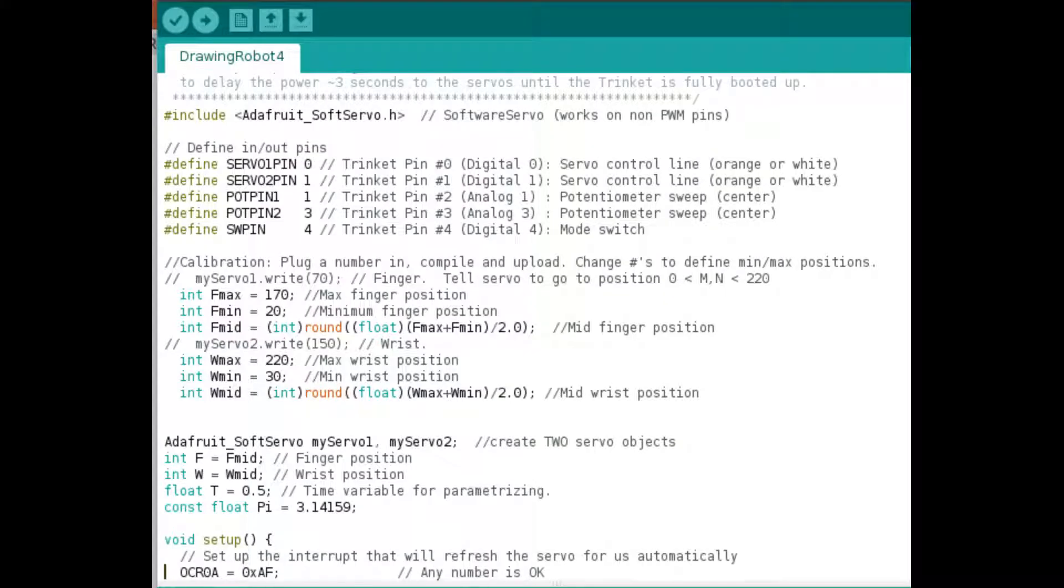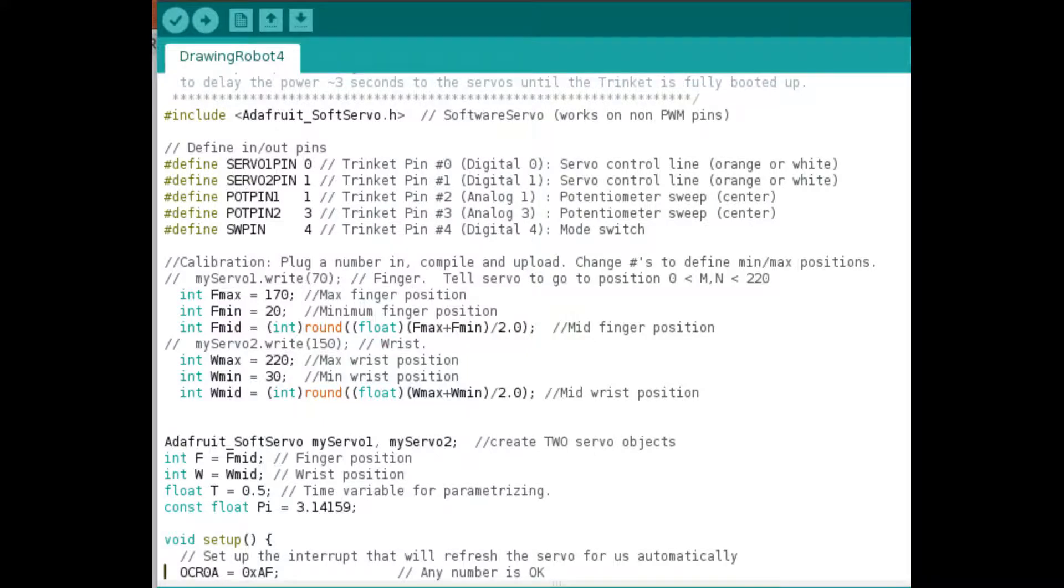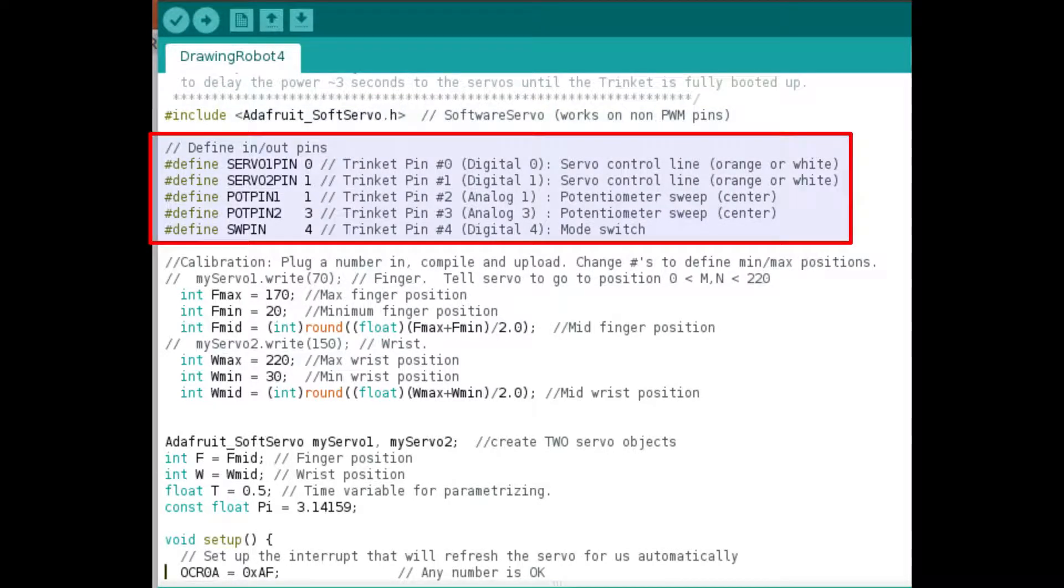Okay, so the first part of the code here is just the header file for Adafruit, softservo.h. Let me just get that from my website. The next set here are where the pins are defined. Servo pin zero and one, that's the two servo motors, pot pin one, two, pot pin and switch pin. Those are defining the other pins on the trinket.